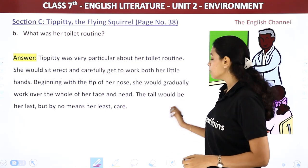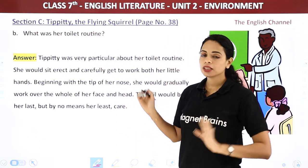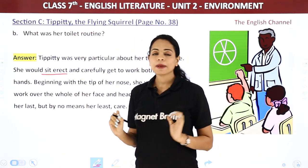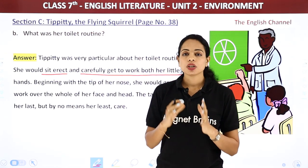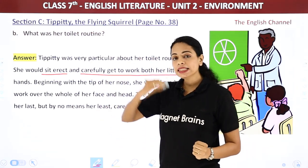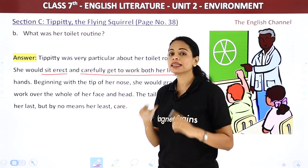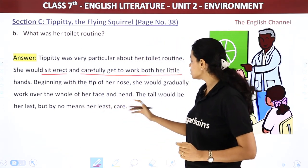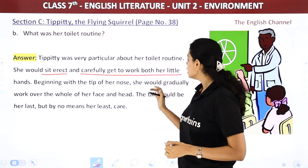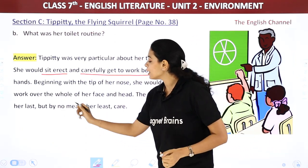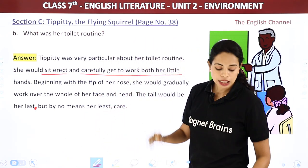Next question: What was her toilet routine? Tippity was very particular about her toilet routine. She would sit erect and carefully get to work with both her little hands. Beginning with the tip of her nose, she would clean her nose, then her face, then her head, then her body, and finally her tail. She would gradually work over the whole of her face and head. The tail would be her last, but by no means her least care.